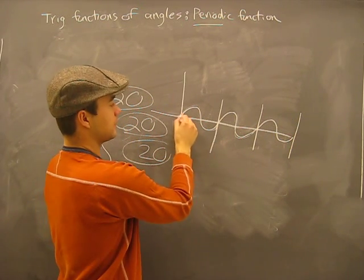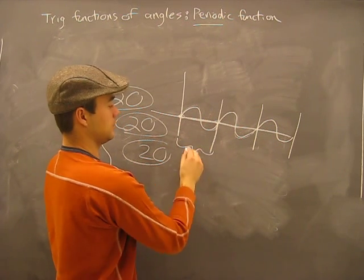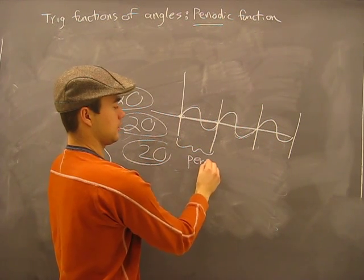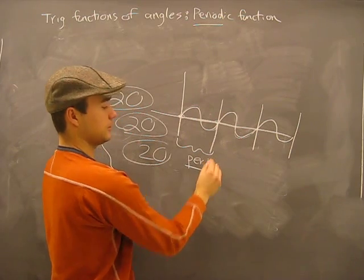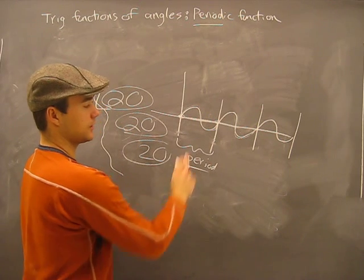What we have here is the distance from here to here, or this section, is the period. Very simple. Until it repeats itself, that's the period, right there.